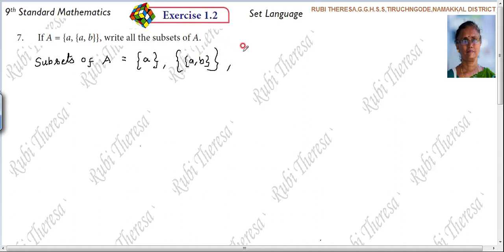So single, single elements. Then two elements together. That is A, {a,b}. Next one is empty set.